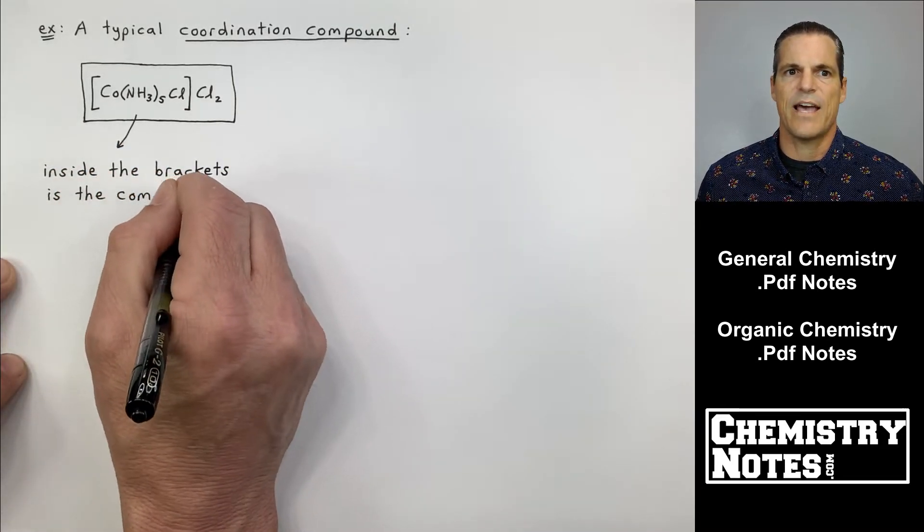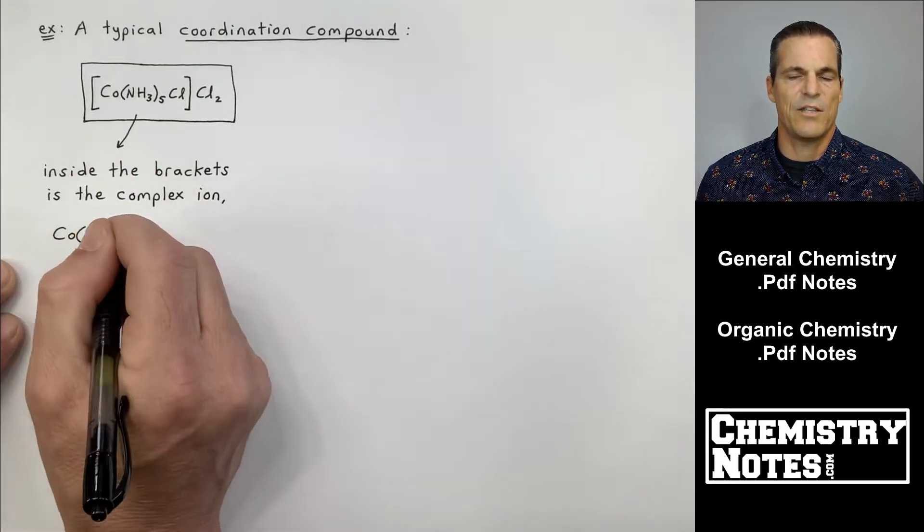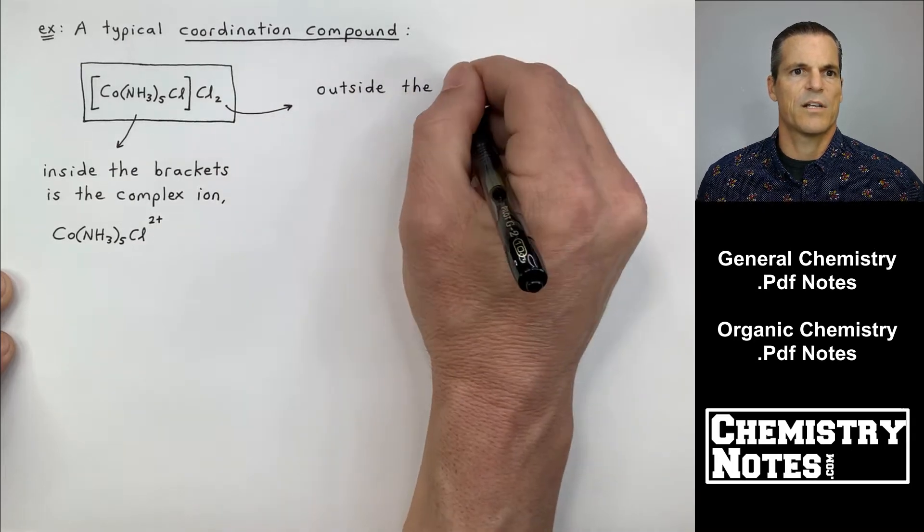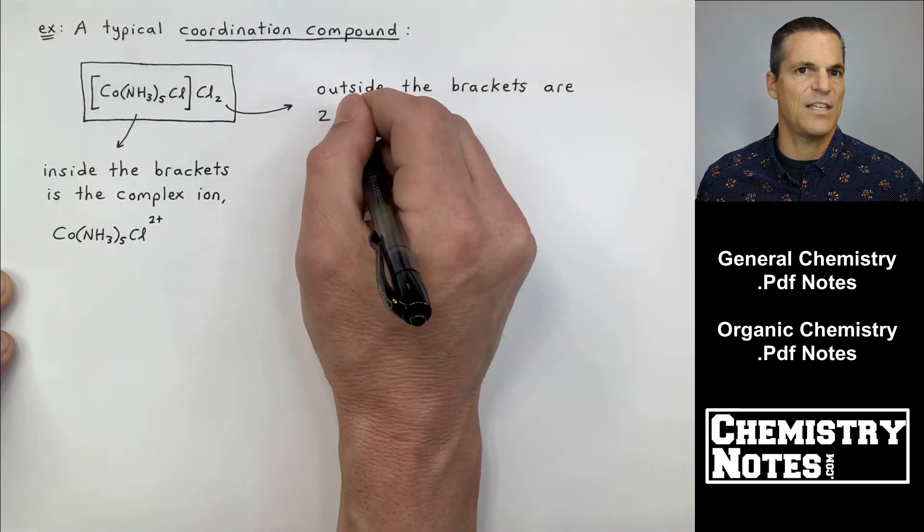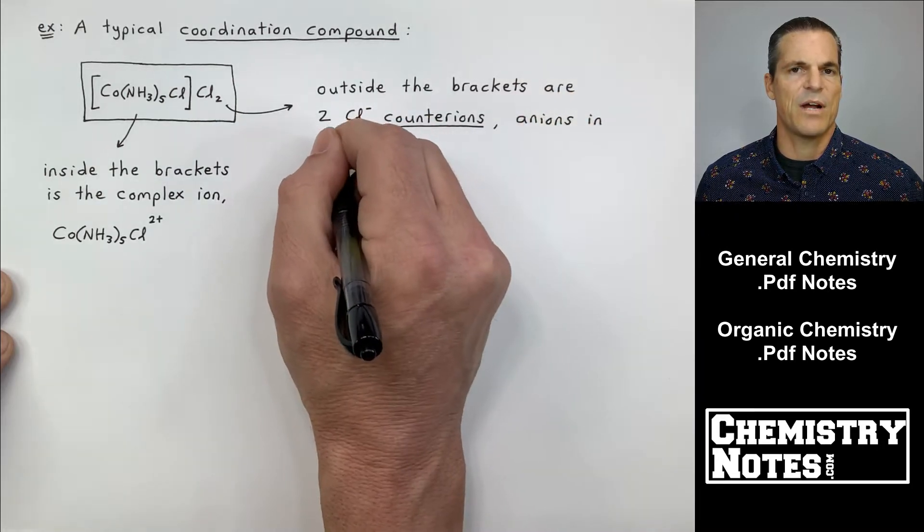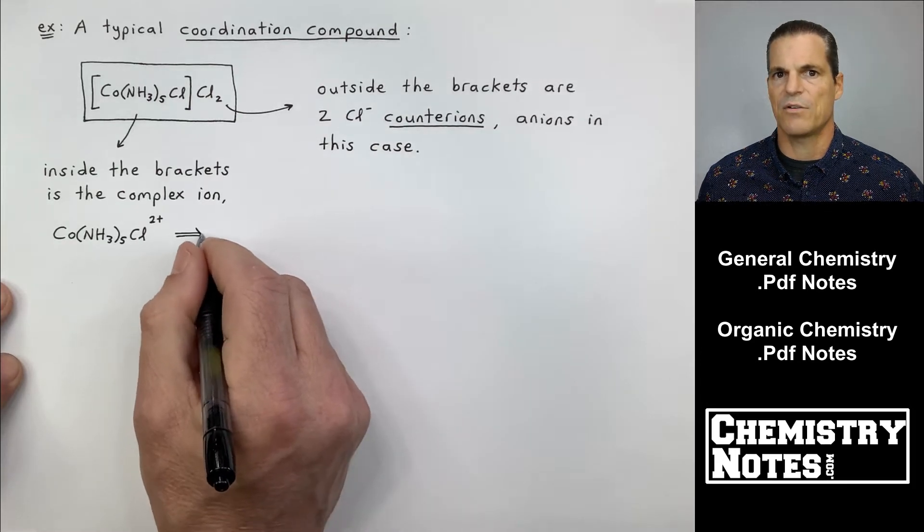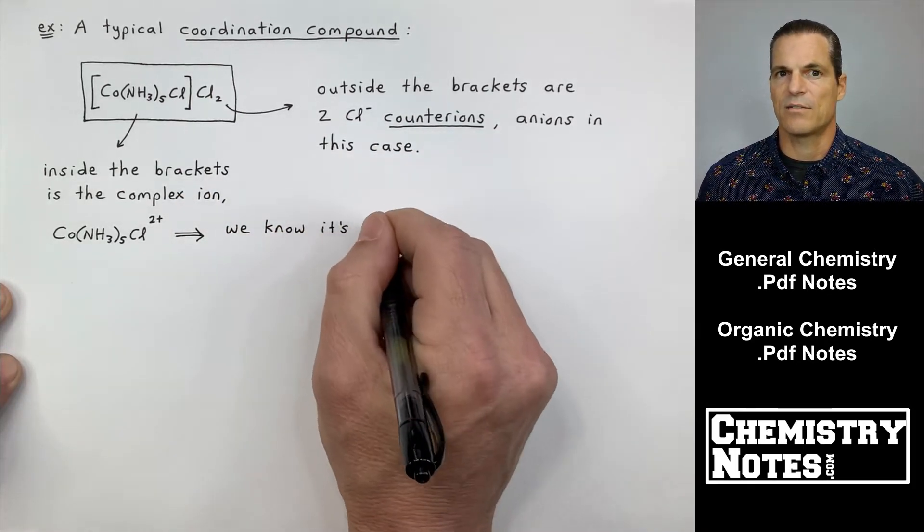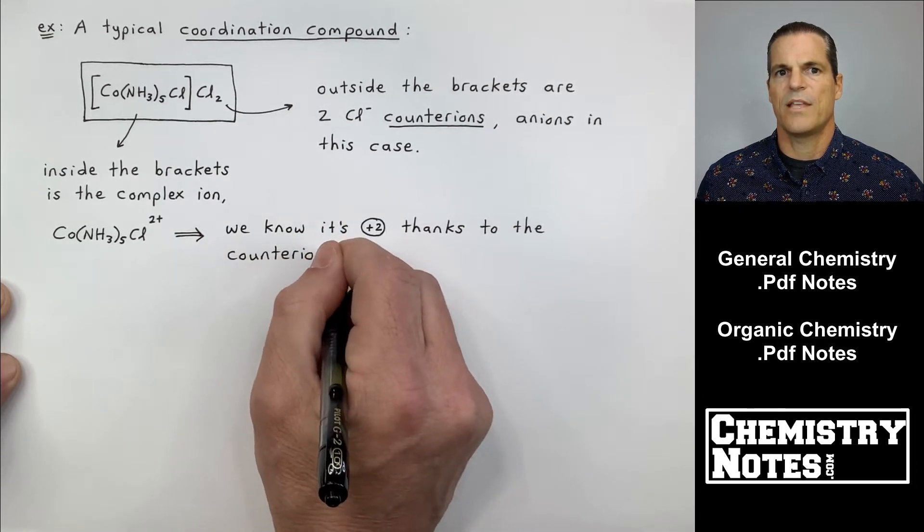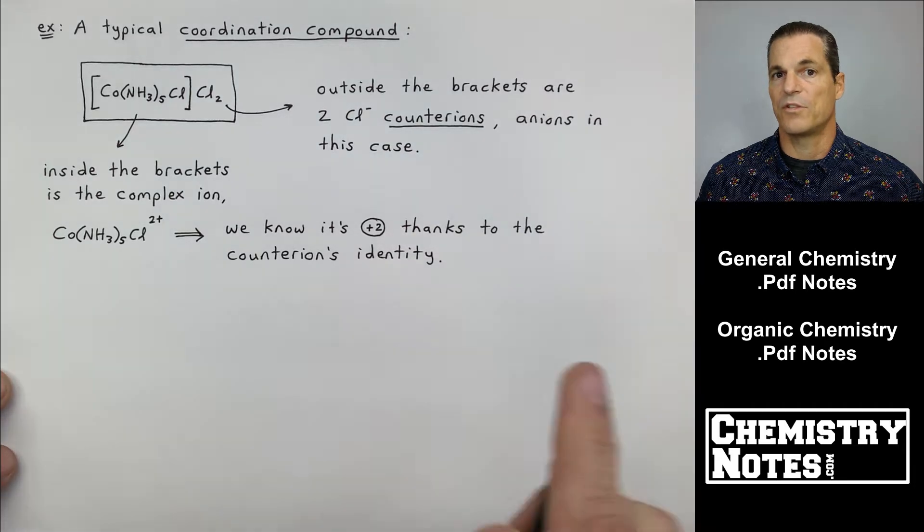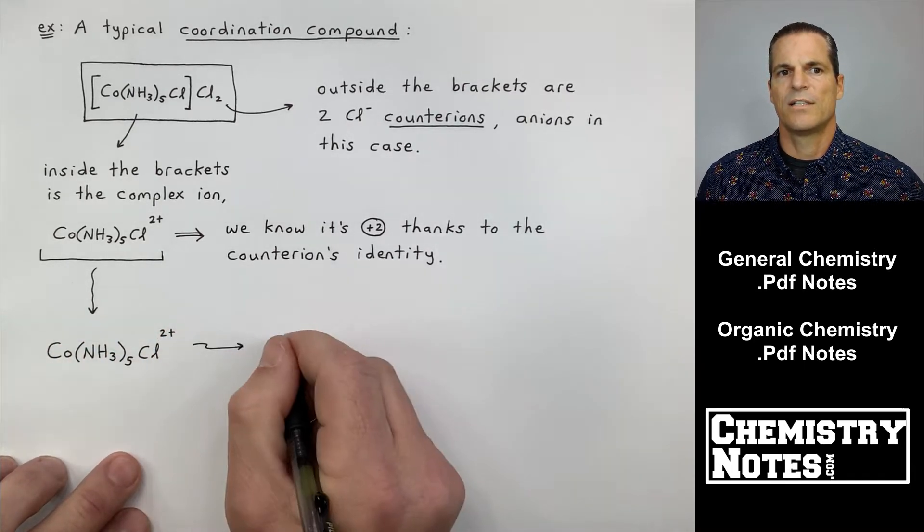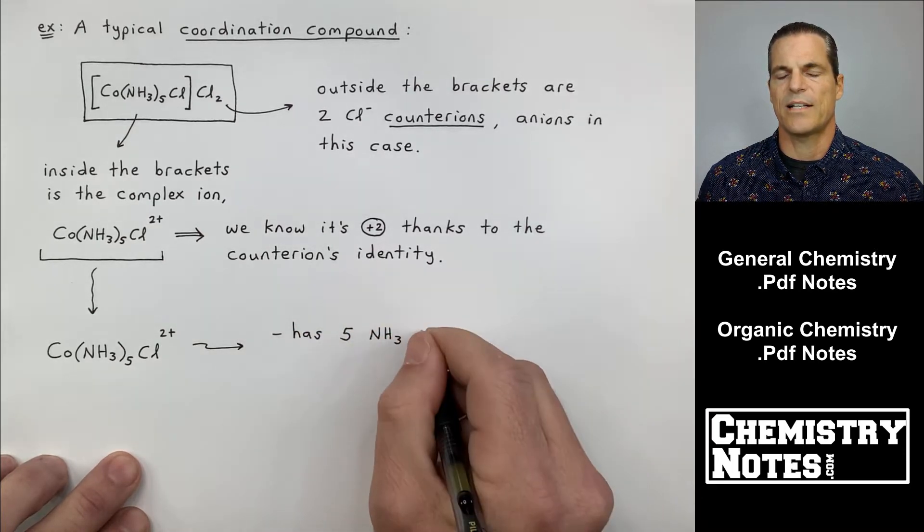So inside the brackets, that is the complex ion. Now, if you look outside and see that you have a Cl2, you should be able to predict the charge inside the brackets of 2 plus. So the complex ion is Co(NH3)5Cl with a 2 plus charge. That whole thing has a 2 plus charge. Now outside the brackets, I've got my counter ions. I've got two Cl minus counter ions, which they're anions in this case. Now back to my complex ion. We know it's plus 2 thanks to the counter ions identity. The counter ions, remember, were the 2 Cl minuses. Chlorine is a halide, Group 17 is always a minus 1. So Co(NH3)5Cl, 2 plus. That's my complex ion.